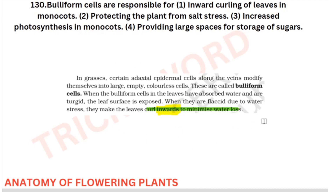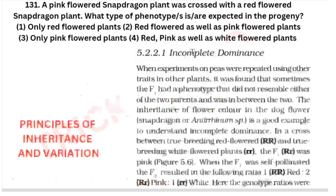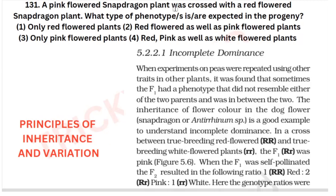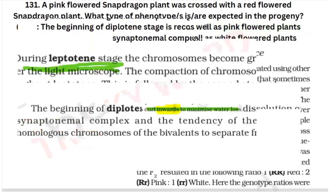A pink-flowered snapdragon plant was crossed with a red-flowered snapdragon plant — what type of phenotype is expected in the progeny? This is based on incomplete dominance. If you have understood incomplete dominance, this is easy. You will be getting both red flowers and pink flowers in the progeny. This is from your incomplete dominance topic in principles of inheritance.